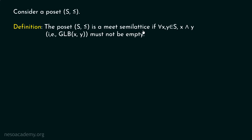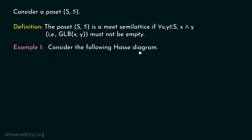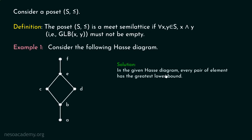Now, with the help of an example, we will try to identify whether a given Hasse diagram is a Meet Semilattice or not. Consider the following Hasse diagram. Our target is to identify whether this Hasse diagram is a Meet Semilattice or not. In the given Hasse diagram, every pair of elements has the greatest lower bound. Consider every pair possible — you can see that every pair of elements has the greatest lower bound.